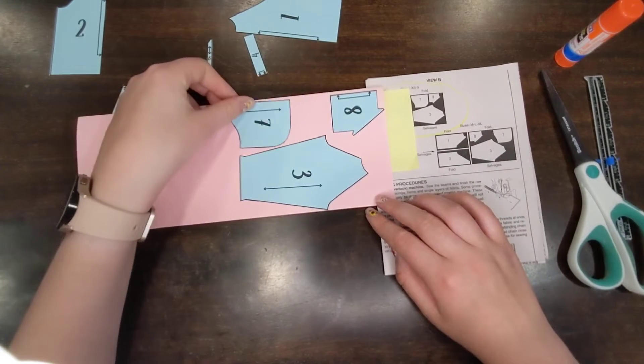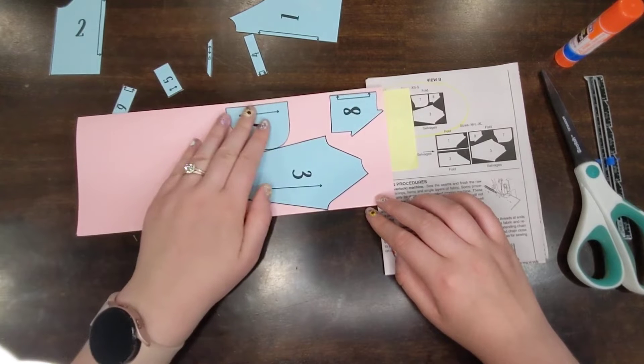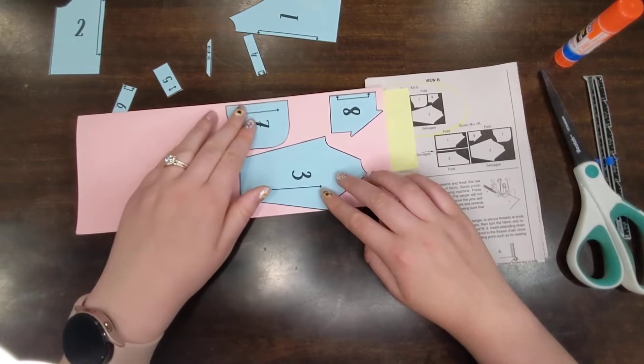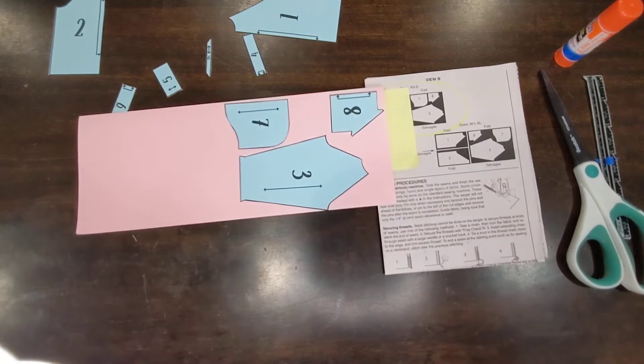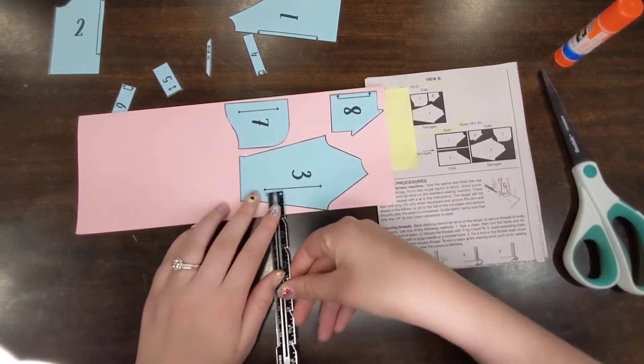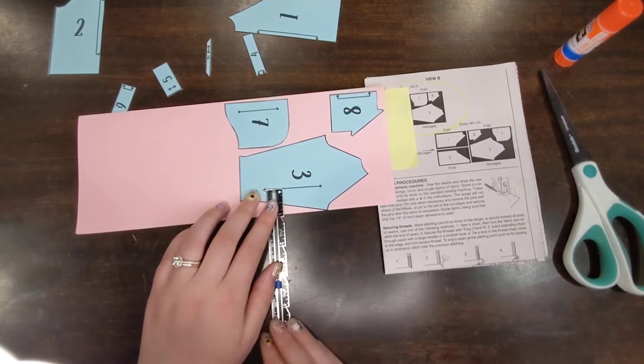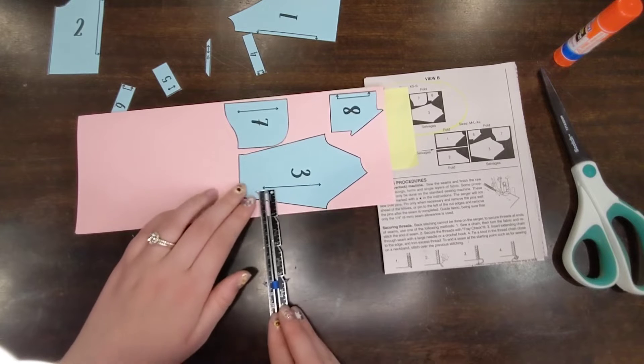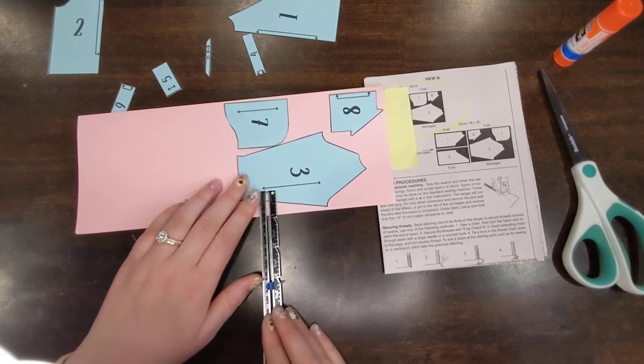And then piece seven is going to go right here. It doesn't need to be on the fold, but it can be close to the fold. But that arrow should be parallel to my folded selvedge. Then I'm going to measure out the left side of my arrow to my selvedge or fold and the right side of my arrow to my selvedge or fold. So I can make sure that those are parallel.